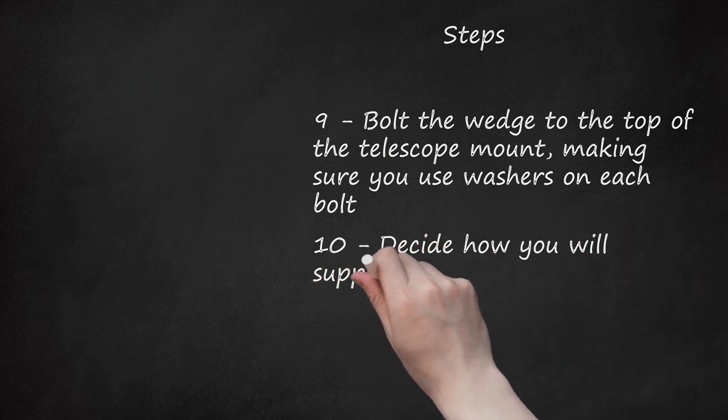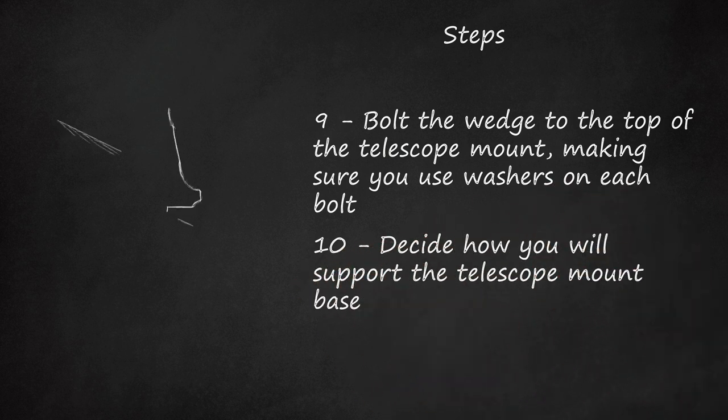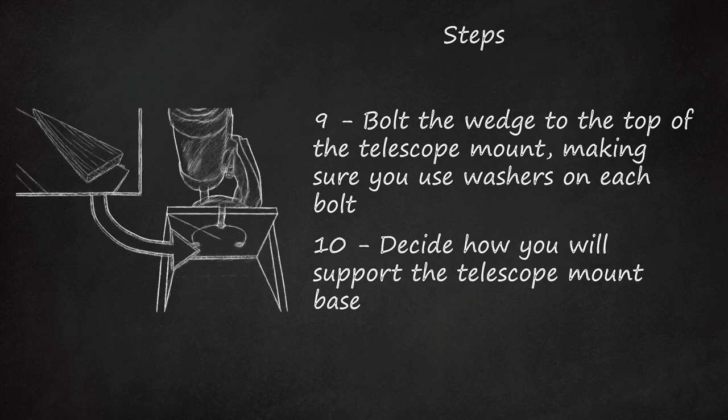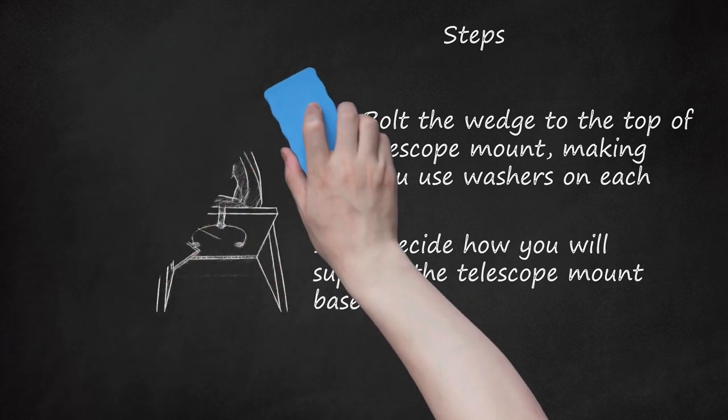Step 10: Decide how you will support the telescope mount base. At this point, you can do one of two things. You can cut triangular pieces of wood to insert underneath the telescope mount board and hold it at a fixed angle, or you can cut larger pieces to attach on the outside of the long base board to support the telescope mount, but also give you the ability to modify the angle if needed. The tricky part here is the geometry. The top surface of the telescope base mount must be raised to an angle equal to the latitude of your location. You did write that down in step 1, right? That angle needs to be as accurate as possible, but for amateur purposes, the tolerances need not be microscopic.